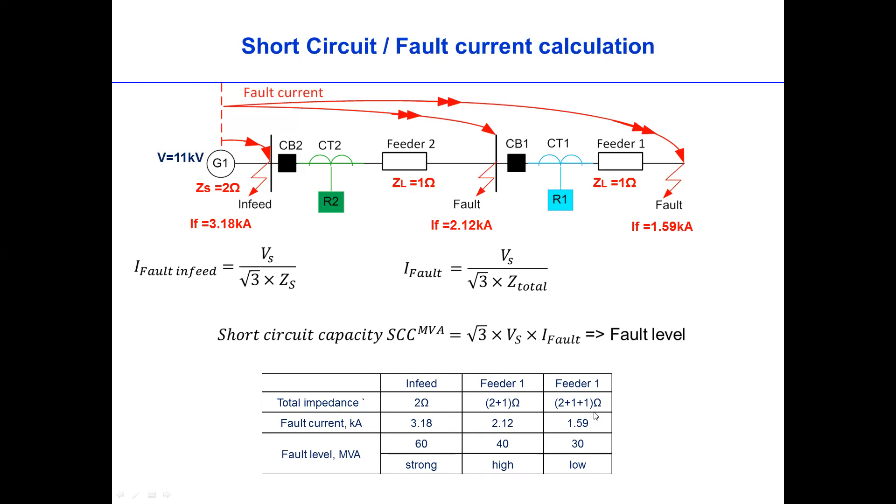And at feeder one here, it is 1.59. In terms of fault level, if we just use this formula, then this will be 60 MVA on the generator one or on the infeed, then 40 MVA on this one, then 30 MVA on here. What it tells is, the fault near the source or the infeed is strong, while the fault far from the source is low or weak.